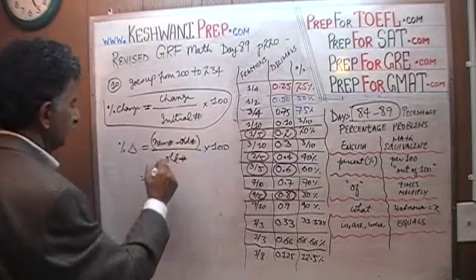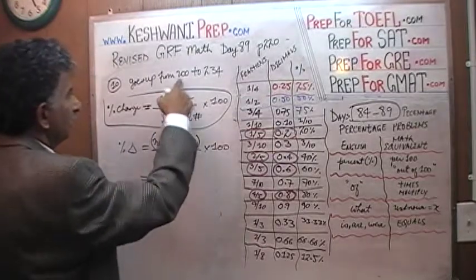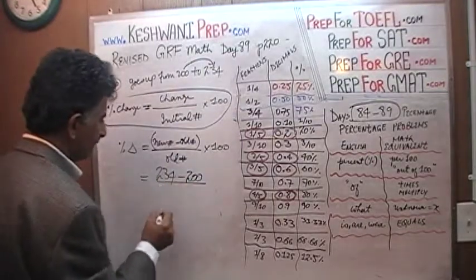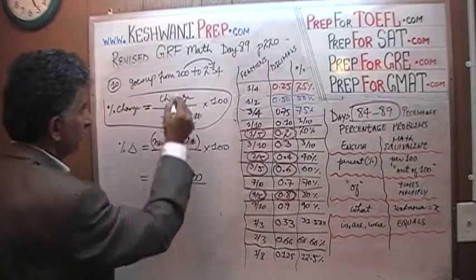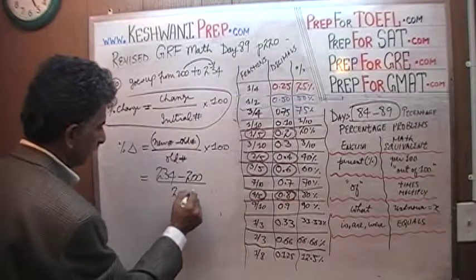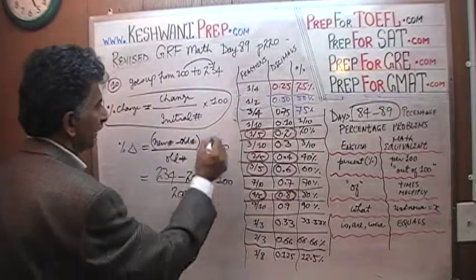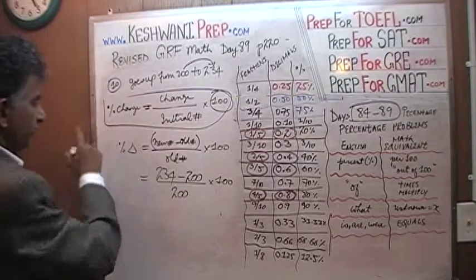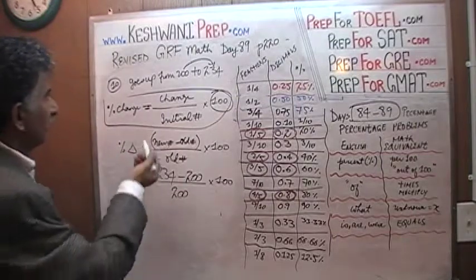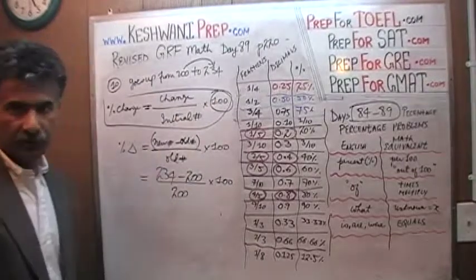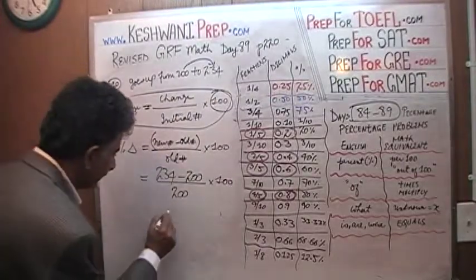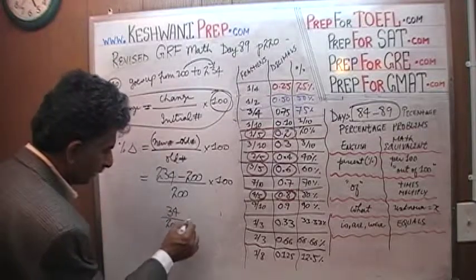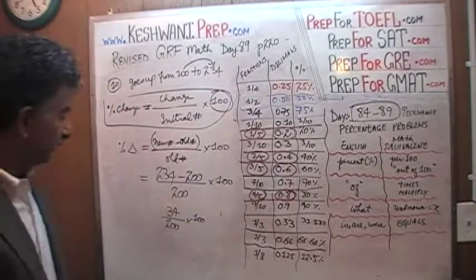Our new number here is 234 and our old number is 200, so we went from 200 to 234. That's our change divided by the original number, 200, times 100. We do this times 100 because we are talking about percentage change. Which makes perfect sense — if you went from 200 to 234, what was the change? From 200 to 234, the change was 34. And you ask yourself: 34 is what percentage of 200? So you divide 34 by 200 and multiply by 100 because it is a percentage, otherwise you end up with a decimal answer.